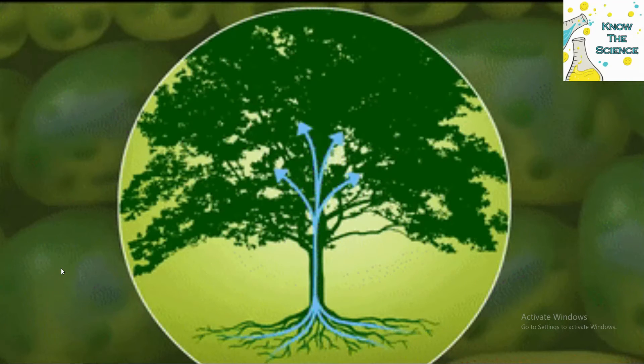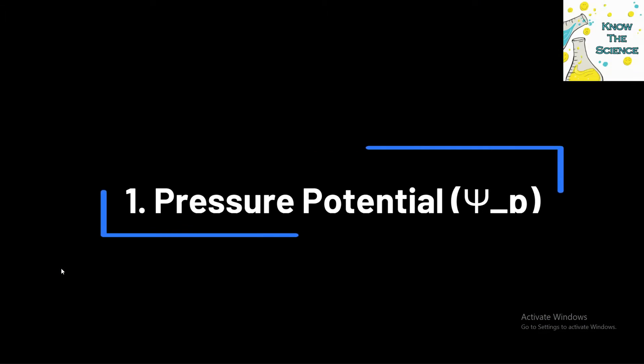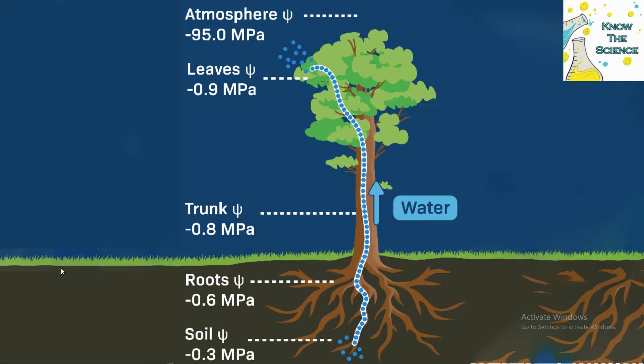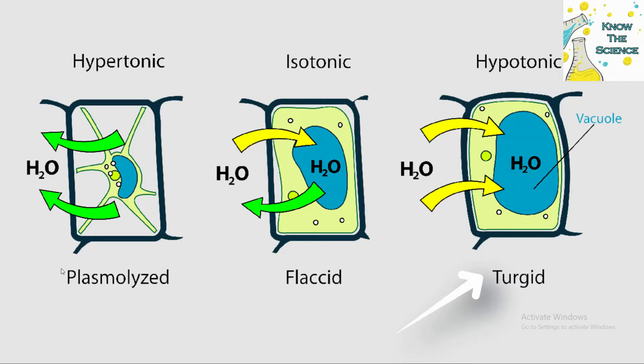The water potential of a system is influenced by several components. Pressure potential accounts for the physical pressure exerted on the water in a system. It can be positive, negative, or zero. Positive pressure potentials occur when water is under pressure, like in a turgid cell. Negative pressure potentials occur when water is under tension, such as in dry soil or a wilting plant. Zero pressure potential occurs when water is at atmospheric pressure, typically at the surface of free water.